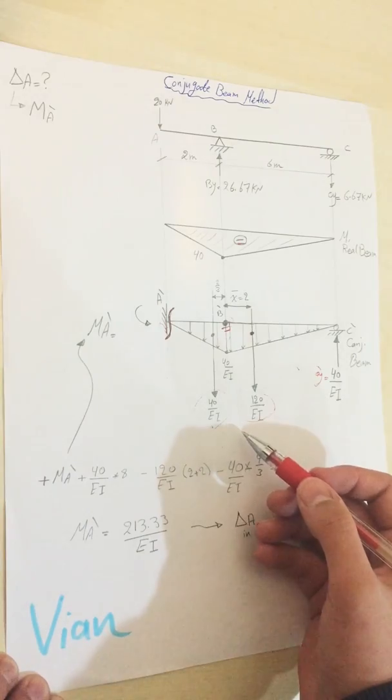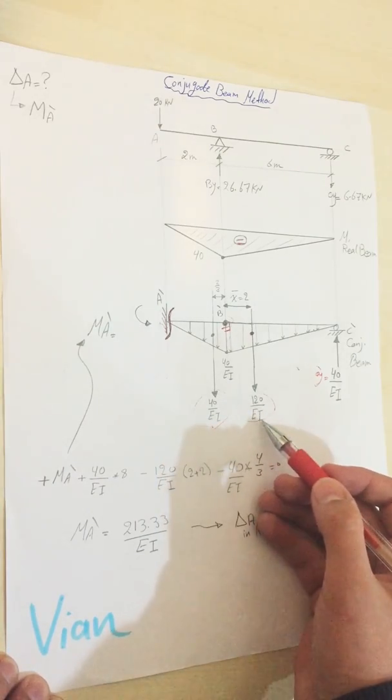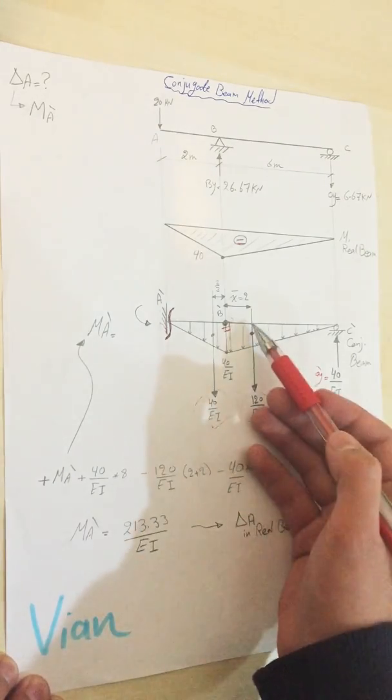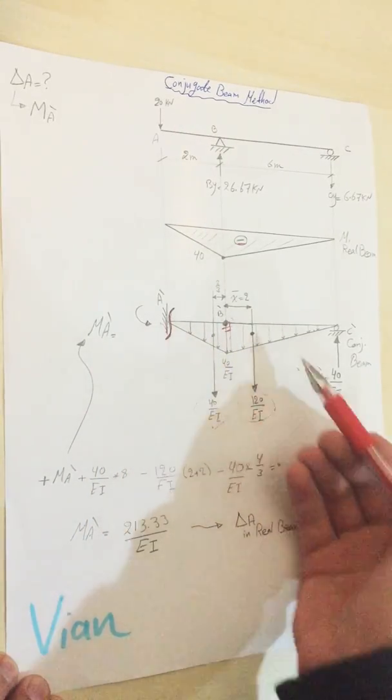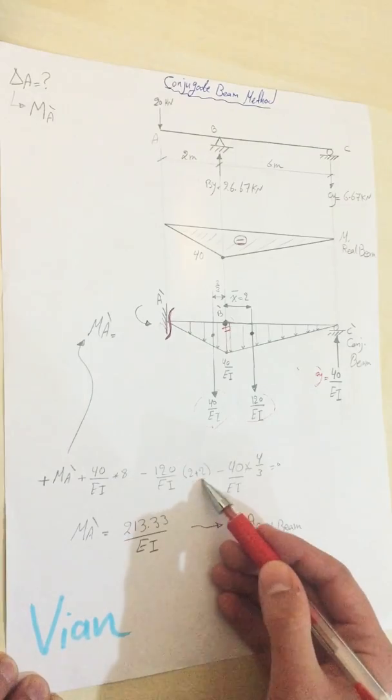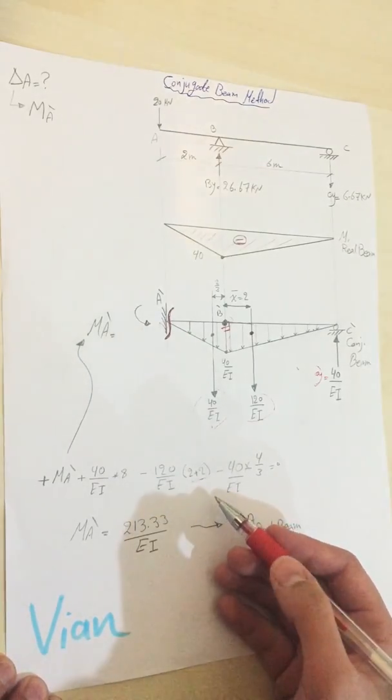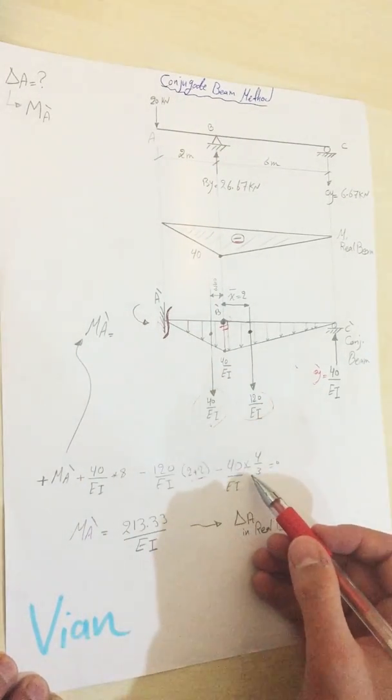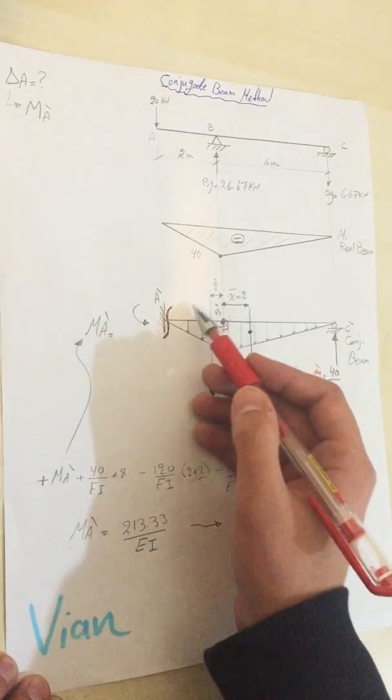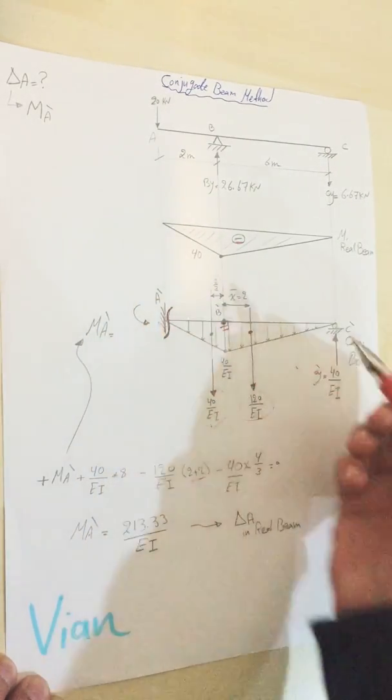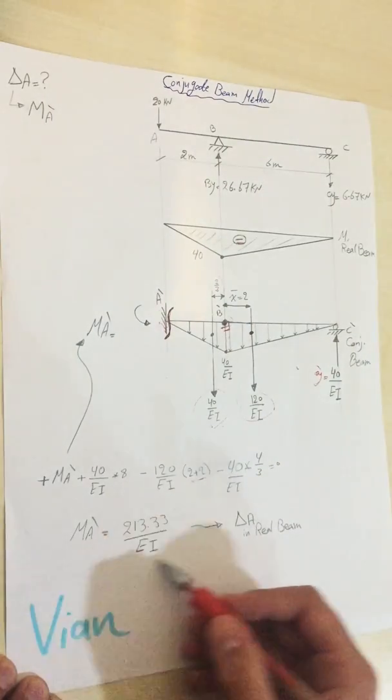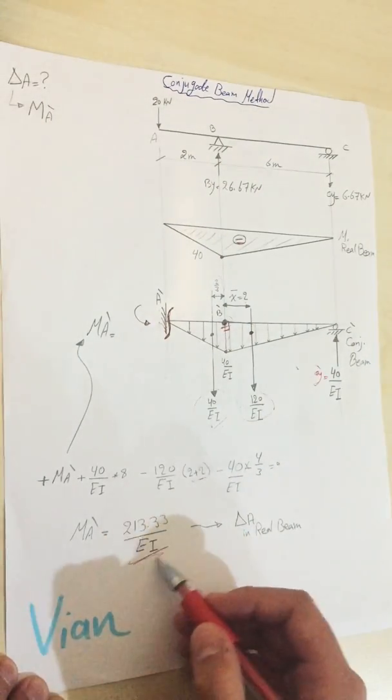Plus this to the centroid of this triangle that we found, which is in here. Minus 40 times 4 over 3, which is 2 minus the centroid of this triangle. By calculator we get this number, which makes the deflection in real beam, and that's all.